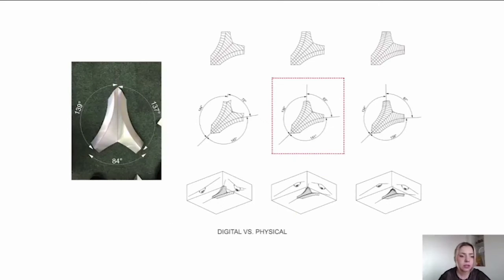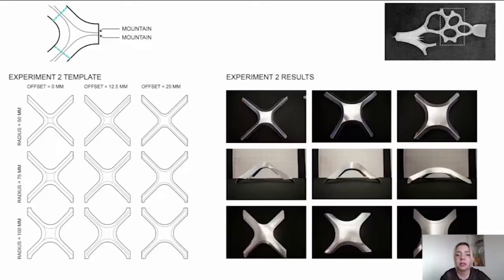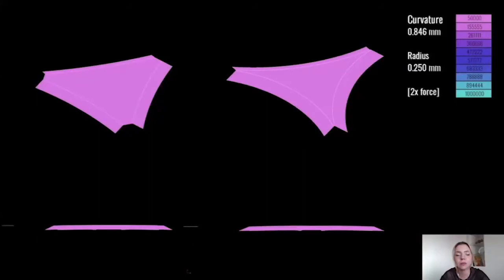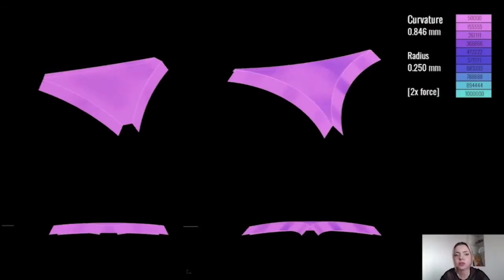So our initial experimentation was focused on evaluating the tolerances between digitally generated curved folded elements and physical experiments, as well as establishing the percentage of material that needs to be removed for mountain and valley creases and the fabrication sequences. This allowed us to understand the structural depth that the components could achieve given a specific fabrication size limit. In our case this was within the range of 40 to 80 millimeters of structural depth. While simultaneously we also started to observe the structural performance of these components under self-weight.